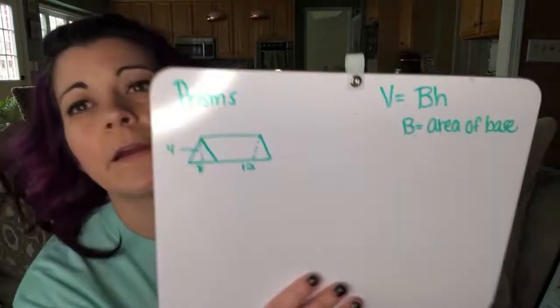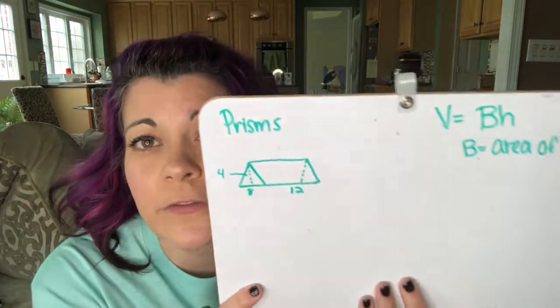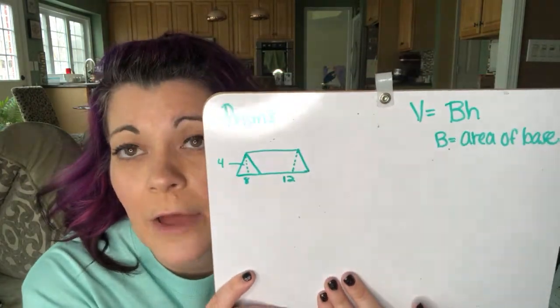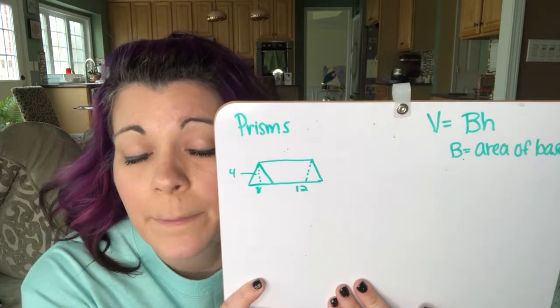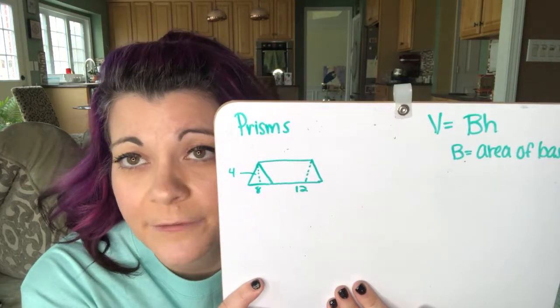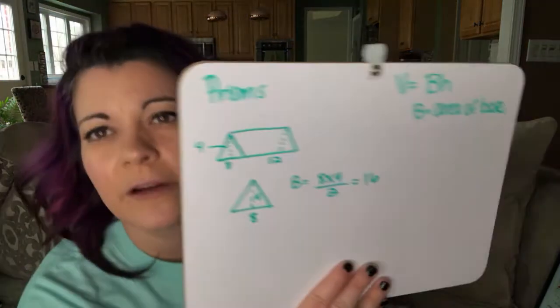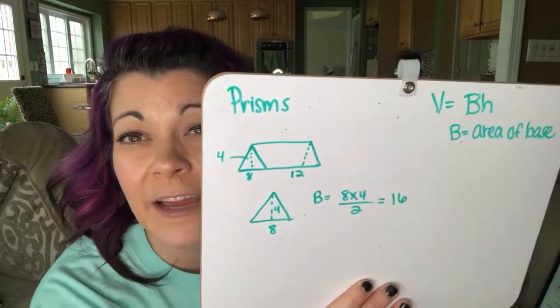So a triangular prism, the base we know is a triangle. So B is going to be area of that triangle, which is base times height divided by two. I'm going to redraw that triangle. It has an eight and a height of four. So area is base times height divided by two: eight times four is 32, divided by two is 16.